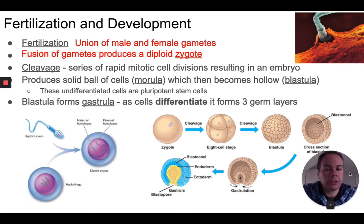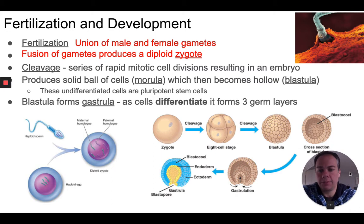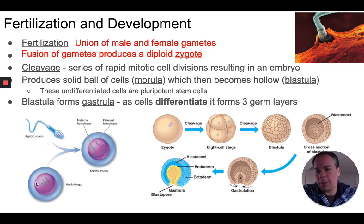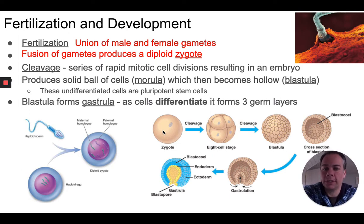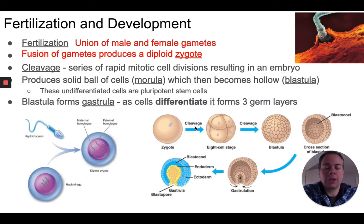After fertilization has taken place, the process of cell division starts — now through mitosis, which is responsible for growth and increase in size of an organism. The haploid sperm and haploid egg combine; chromosomes in the zygote come from both parents. That initial cell, the zygote, goes through mitosis to produce two cells, then those two cells divide to produce four cells, then eight cells, and so on.